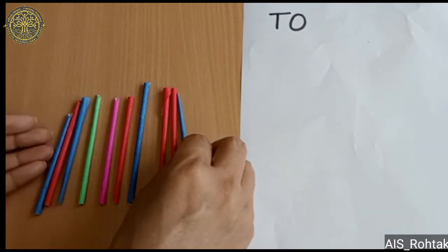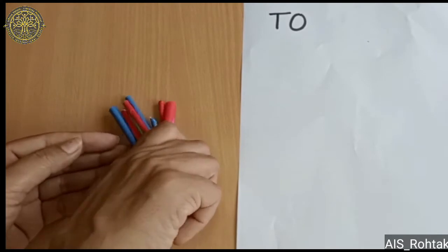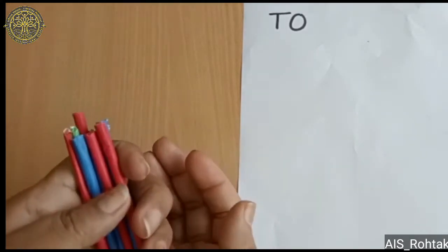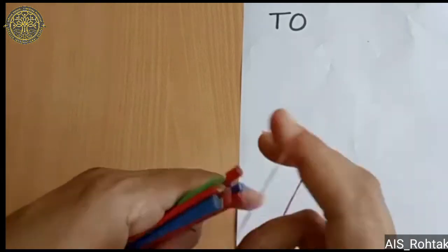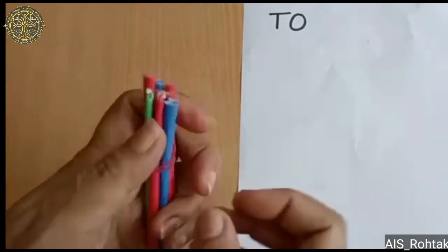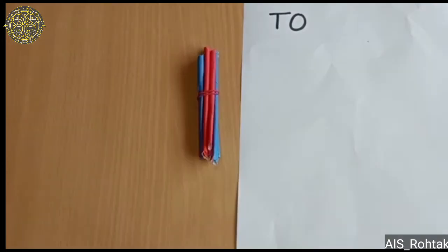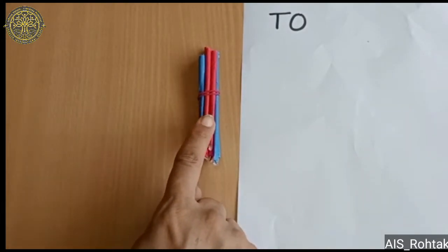Let's make the bundle of these loose sticks. These 10 loose sticks make 1 ten. One bundle of 10 sticks is called 1 ten.